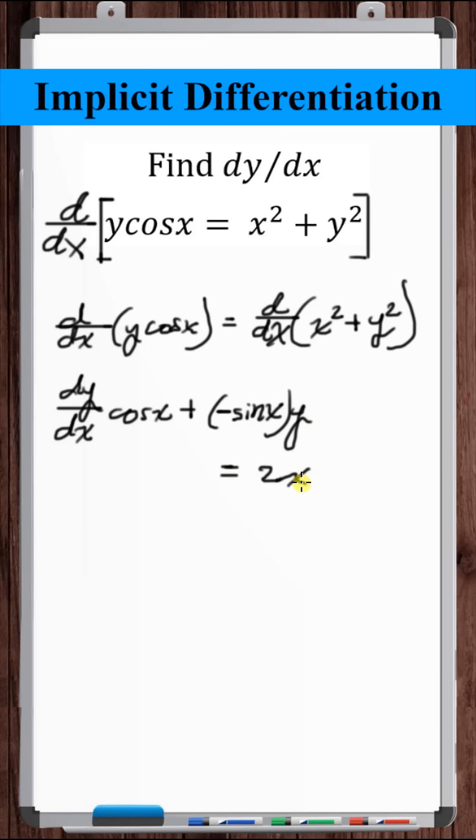Derivative of x squared is 2x. Derivative with respect to x of y squared, we need to use the chain rule. The derivative of something squared is 2 times that something times the derivative of that something.